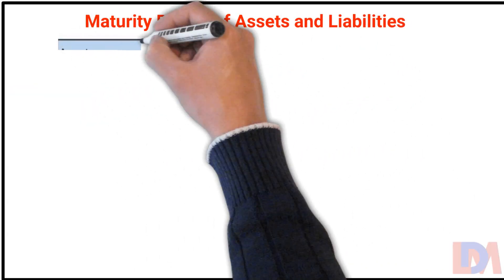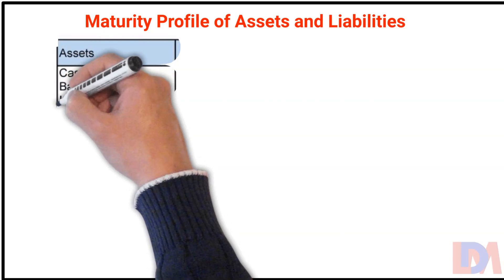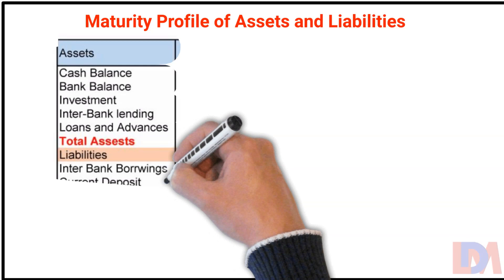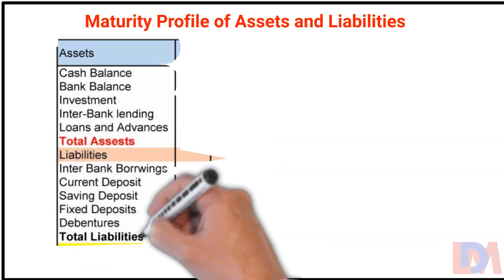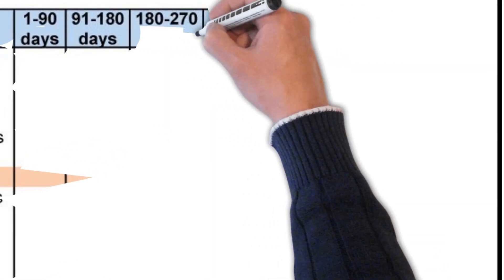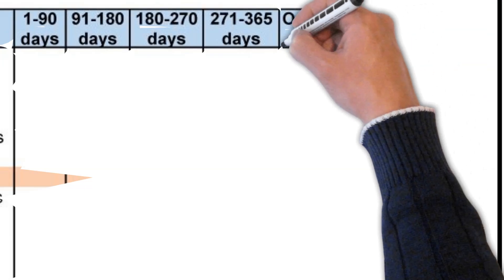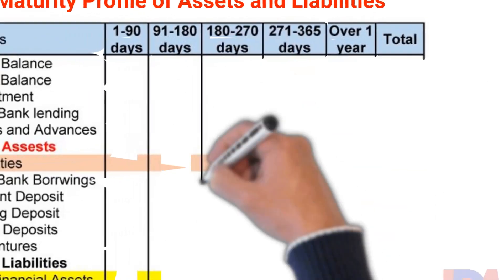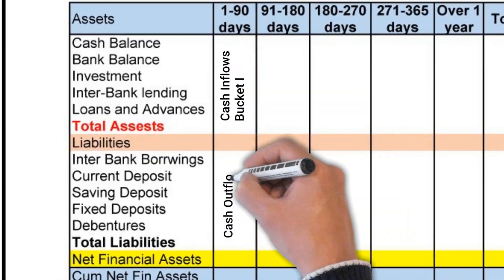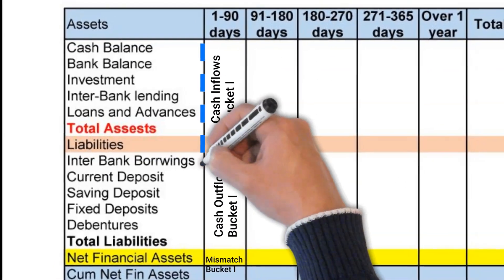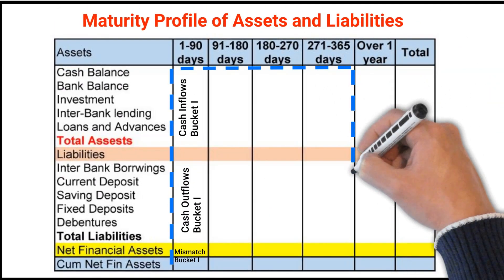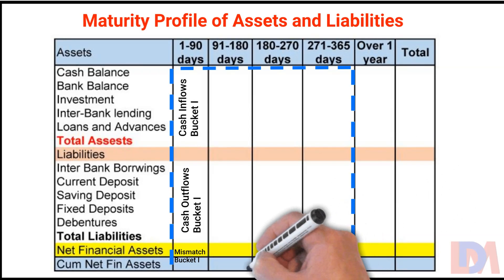Banks compute maturity profile of assets and liabilities divided into different time buckets. The time buckets may be distributed into 1 to 90 days, 91 to 180 days, 181 to 270 days, 271 to 365 days, and over one year. Within each time bucket, there could be mismatches depending on cash inflows and outflows. Mismatches up to one year, that is the first four buckets, would be relevant since these provide early warning signals of impending liquidity problems.